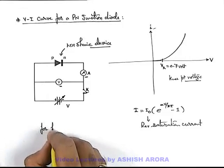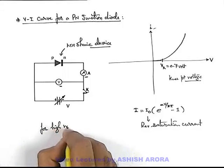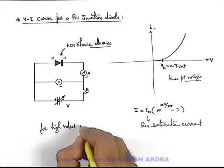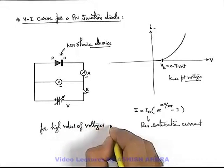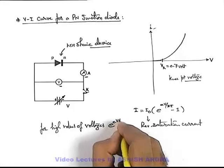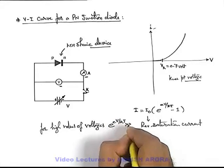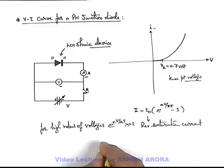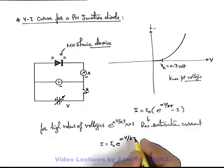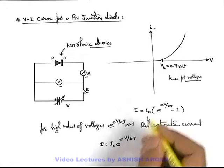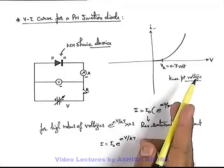For high values of voltages, e^(eV/kT) will be very large compared to unity, so the value of current can be given as I₀e^(eV/kT). This appears as an exponential curve for high values of voltages.